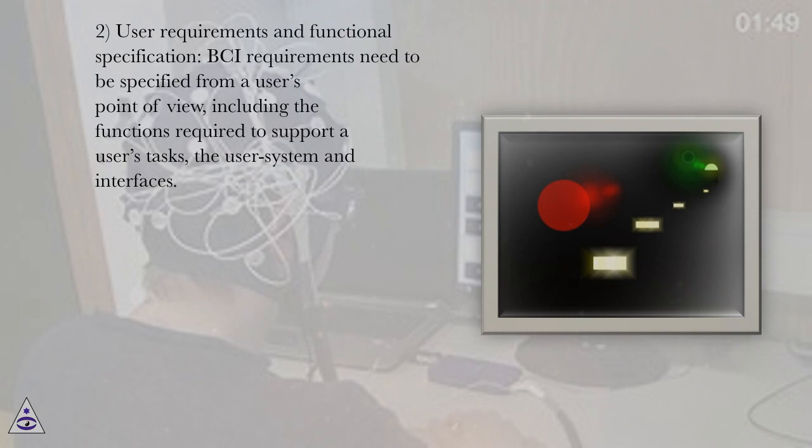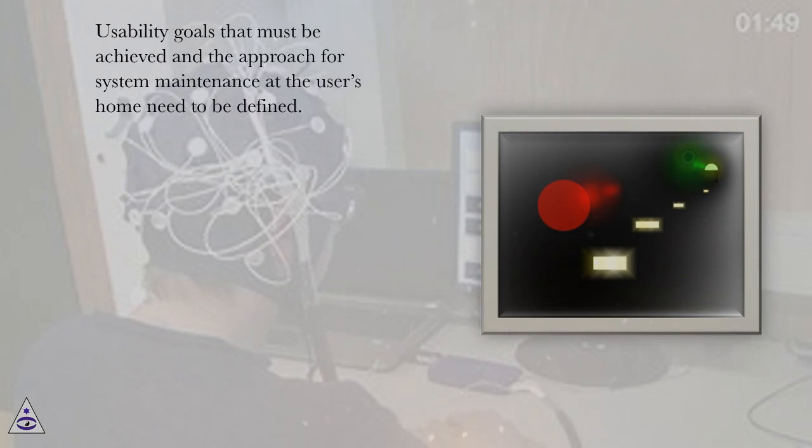2. User Requirements and Functional Specification. BCI requirements need to be specified from a user's point of view, including the functions required to support a user's tasks, the user system and interfaces. Usability goals that must be achieved and the approach for system maintenance at the user's home need to be defined.